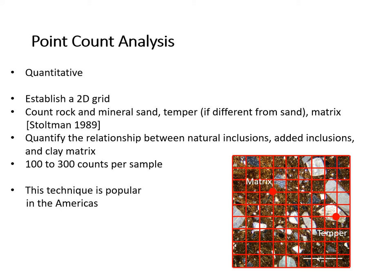The point count method in ceramic petrography borrows almost directly from geology. The method introduced by James Stoltman is the one most commonly used by archaeologists in the United States. The analyst records the relative proportions of sand, temper (if the temper is different from the naturally occurring sand), and matrix, which is the clay in the silt-sized particles. The goal is to quantify the relationships between natural inclusions and those intentionally added by the potter, and the fired clay matrix.